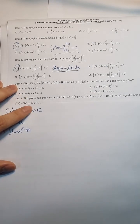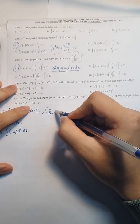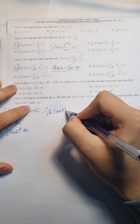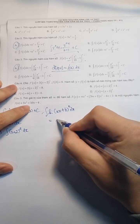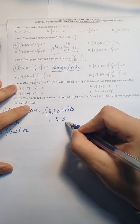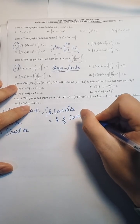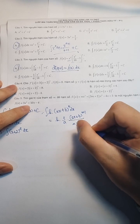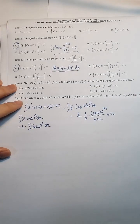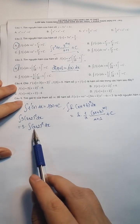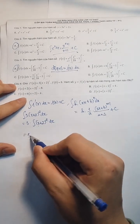Thì công thức là gì? Đó là nguyên hàm của K lần (AX+B) mũ N dx. Thì nó bằng K lần nhân với 1 trên A và nhân với (AX+B) mũ N+1 trên (N+1) và cộng C. Thì mình thay thôi. A đây bằng 1 đúng không? Bởi vì là X. N đây bằng 2. N bằng 3 như thế đây.